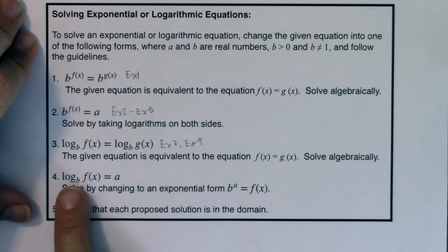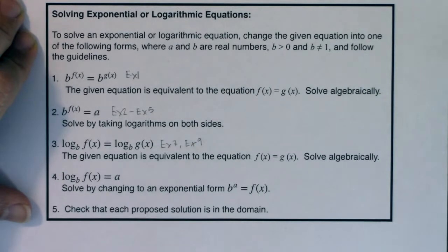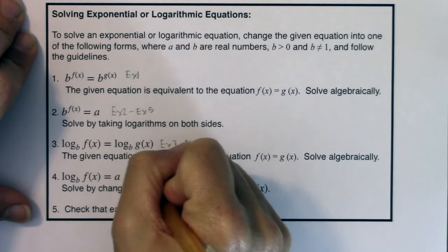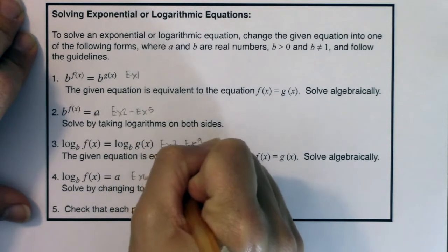And then there were times when we had a logarithm on one side of the equation, and a number on the other. And when that was the case, we solved this by changing your equation into the equivalent exponential form. And we saw that in example 6, and example 8.